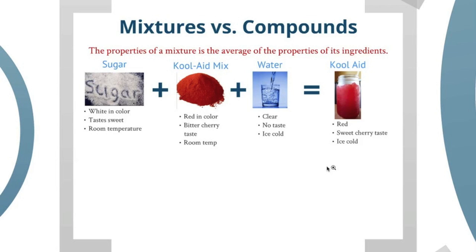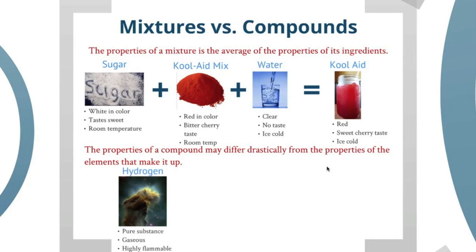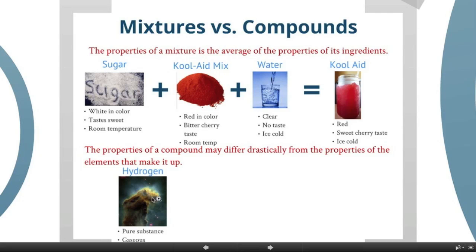Now, let's compare that to a chemical compound. The properties of the compound may differ drastically from the properties of the elements that make it up. Say I had hydrogen. Hydrogen is a pure substance, it is gaseous hydrogen gas, and it's highly flammable. This is actually most stars burn by burning hydrogen, and this is a cloud of hydrogen in space called a nebula. Those are some of the properties or characteristics of hydrogen.